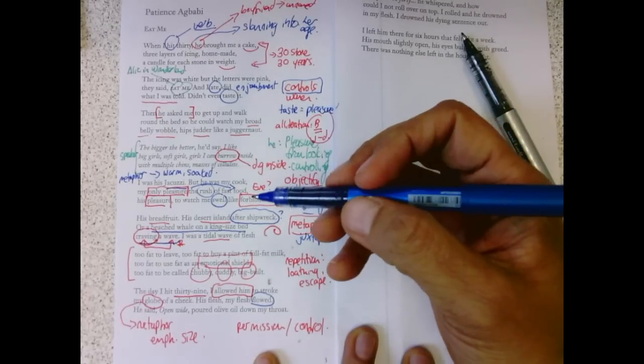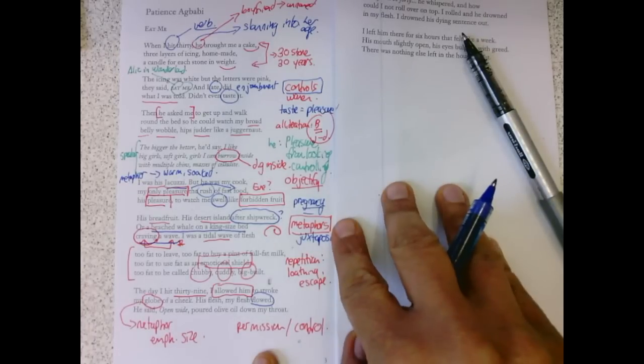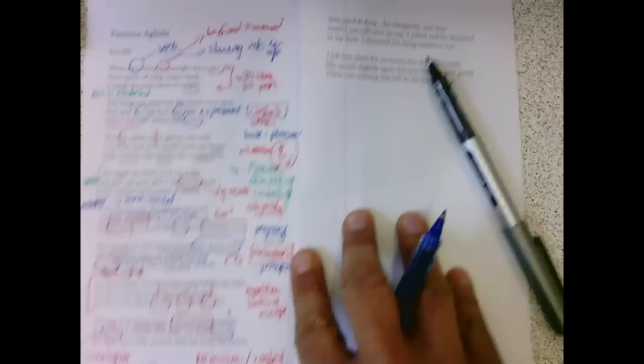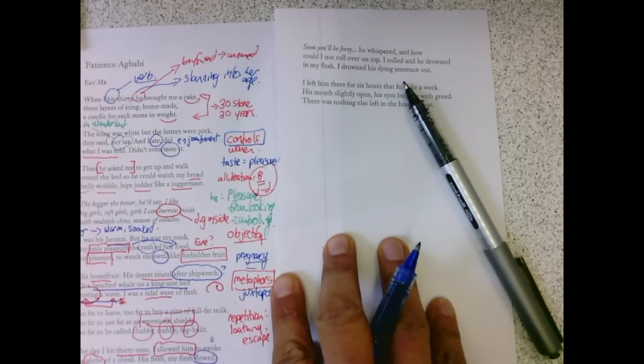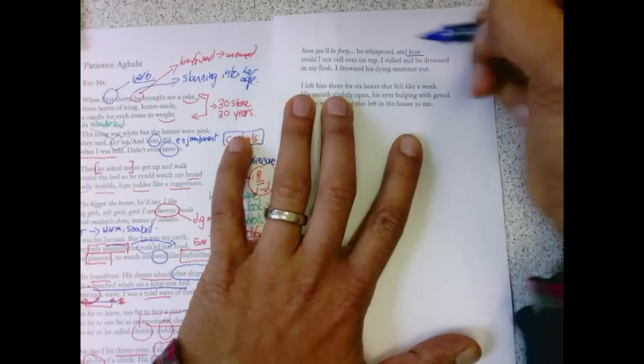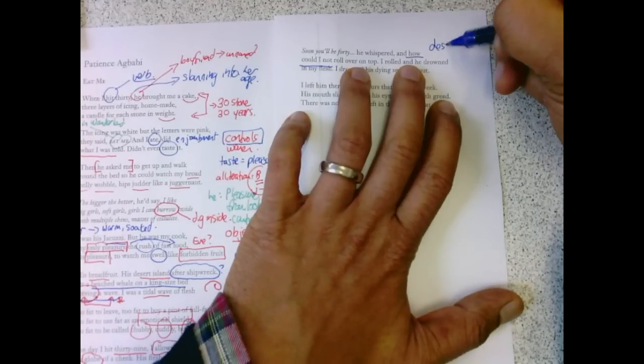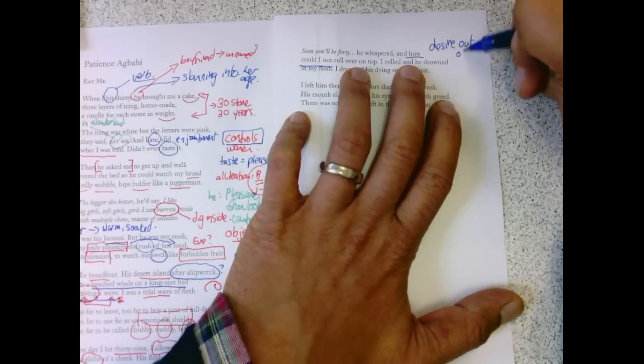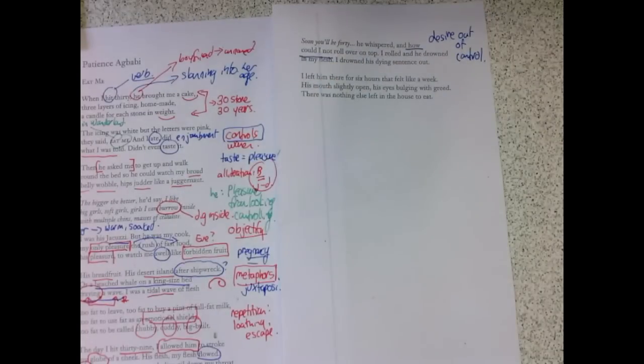He said, open wide. He poured olive oil down my throat. Soon you'll be 40, he whispered. And how could I not? How could I not? This is desire out of control. This idea that she had no choice.